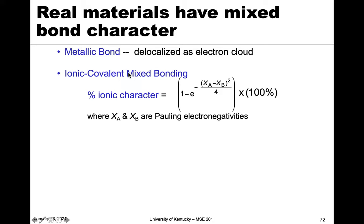Let's talk specifically about ionic-covalent character. When we talked about ionic bonding, we talked about how electronegativity governs how ionic something is. If two electronegativities are really close, it's more covalent; if they're further apart, it's ionic. We can use that for a compound to determine this kind of mixed bond state — in other words, the percent ionic character.